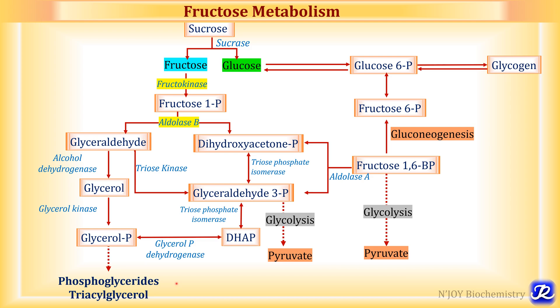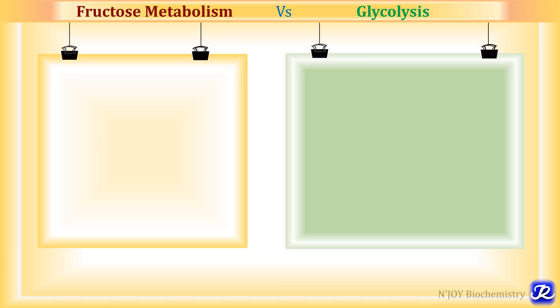So now we know that in fructose metabolism, fructose can be channeled towards formation of pyruvate through glycolysis, and in fasting and starvation there can be formation of glucose through gluconeogenesis. There can also be formation of glycogen in the well-fed state, and glycerol phosphate is channeled towards formation of phosphoglycerides and triacylglycerol.